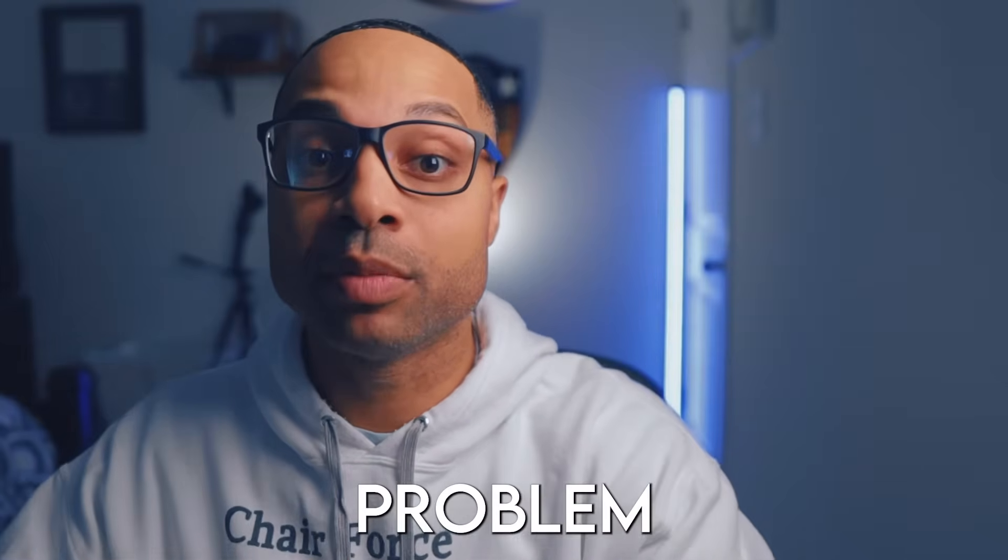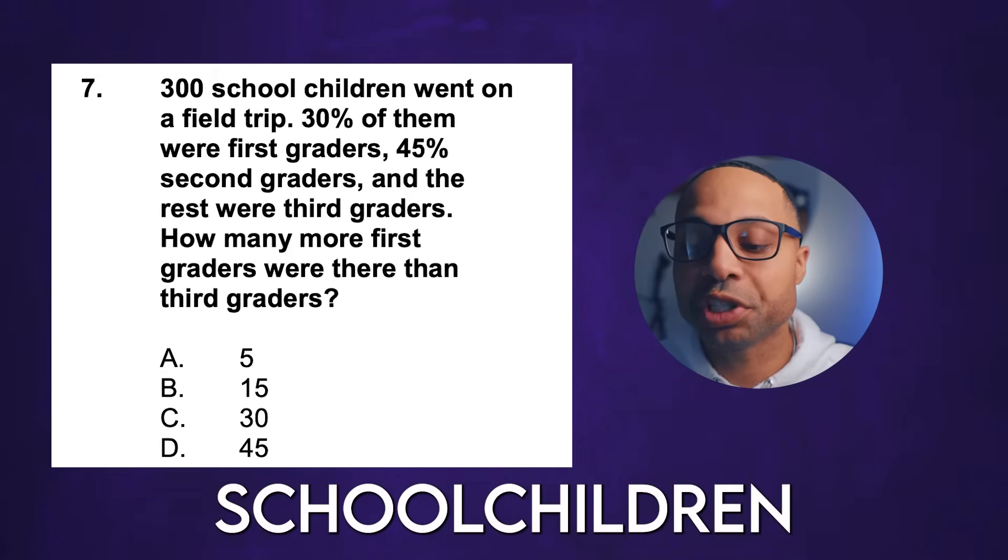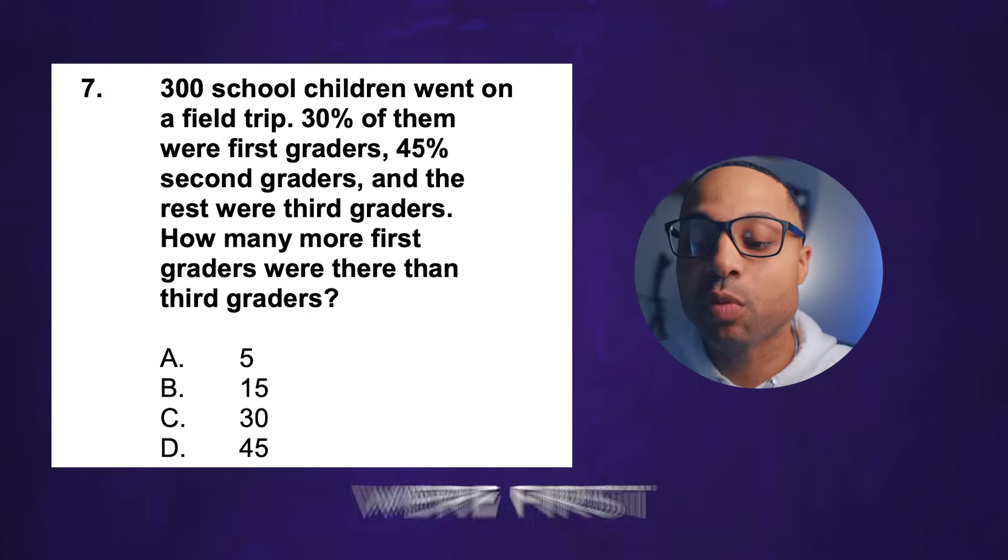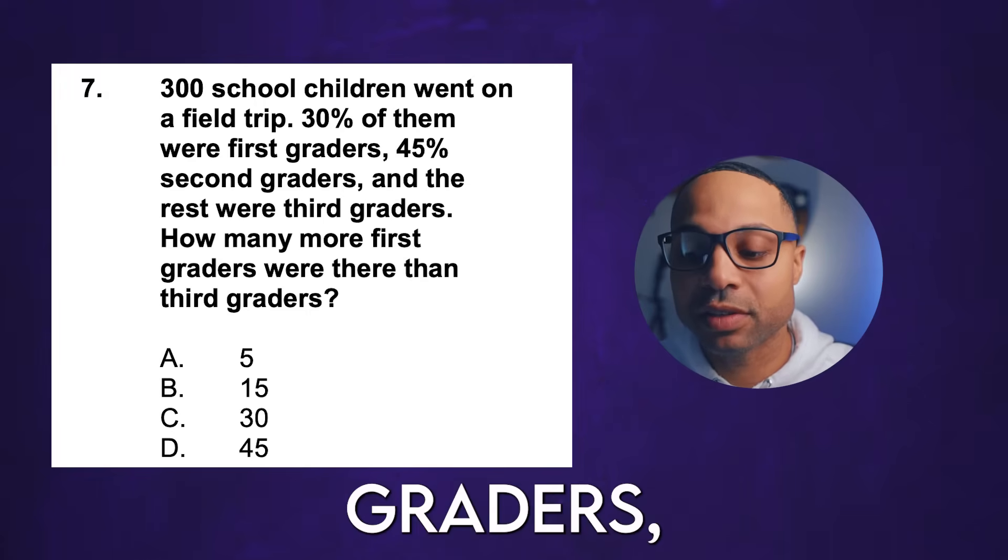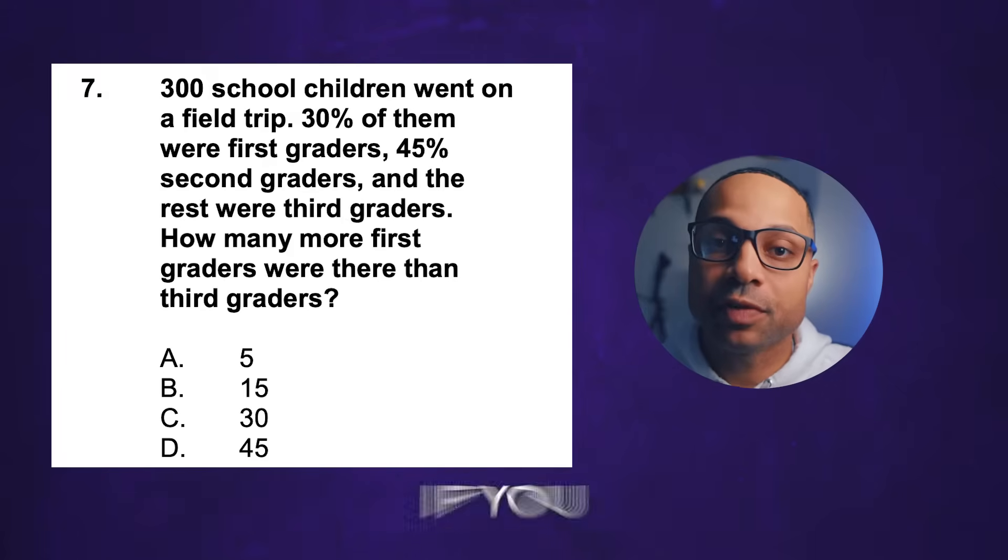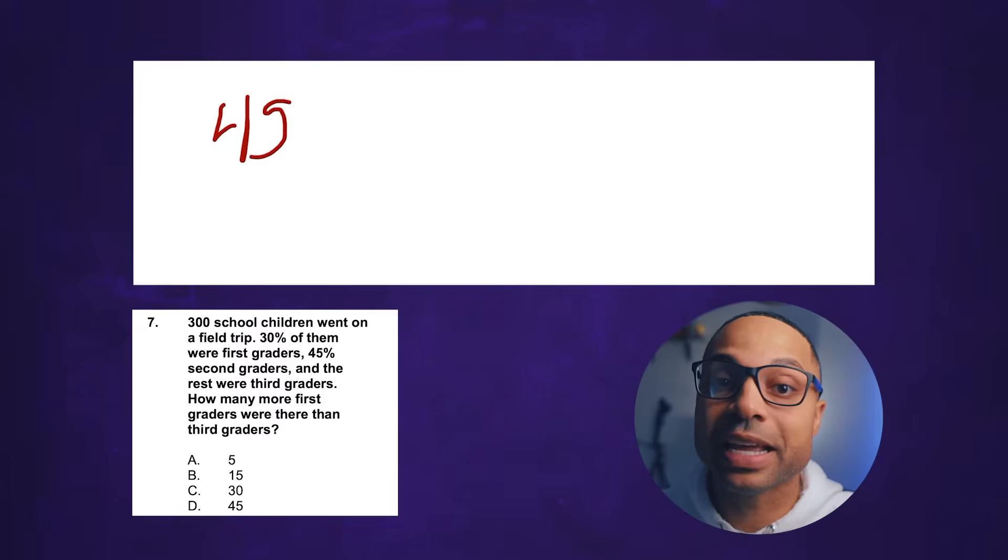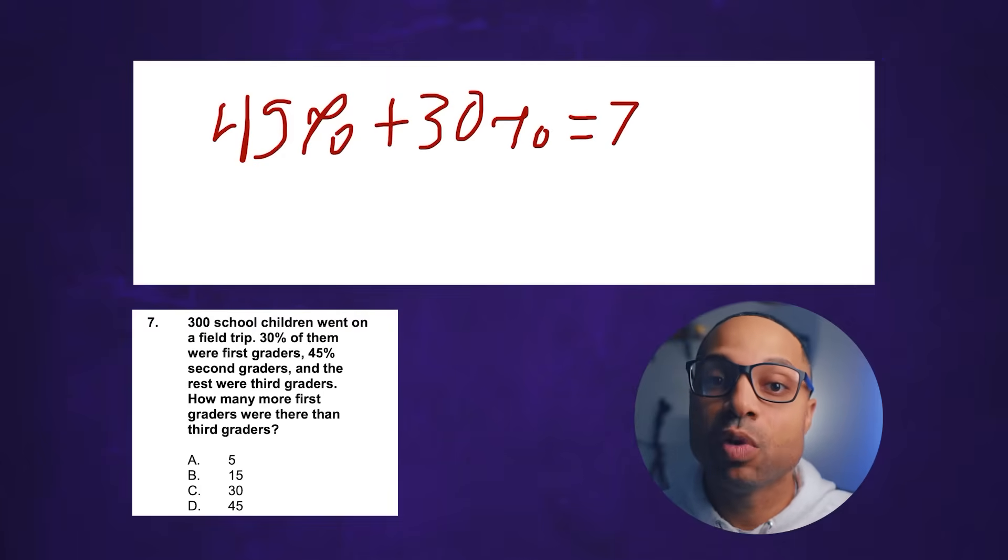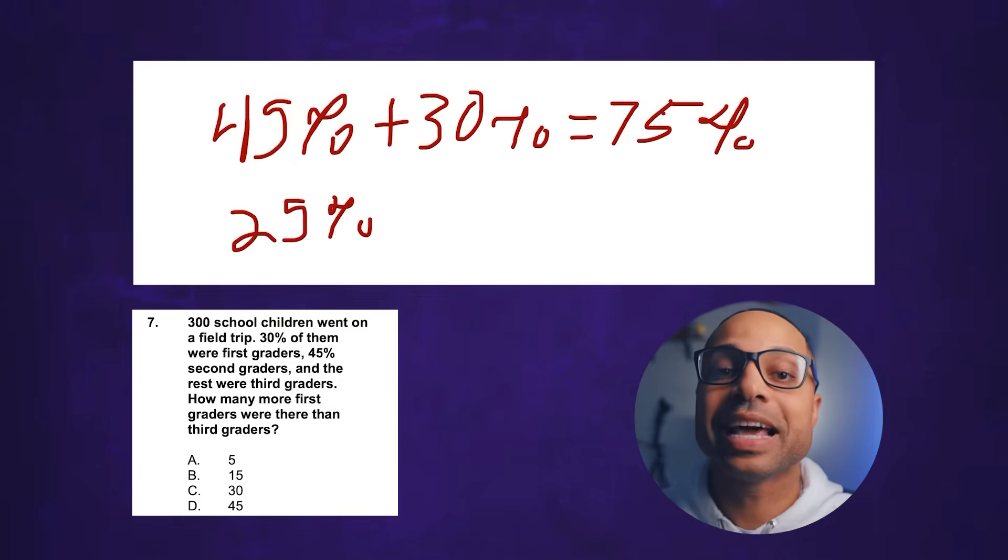Now let's take a look at a word problem with percentages. It says 300 school children went on a field trip. 30 percent of them were first graders, 45 percent second graders and the rest were third graders. How many more first graders were there than third graders? Now if you look at this word problem it doesn't tell you the percentage of third graders so you got to figure that out. Since they told you the percentage of first and second all you have to do is add the 30 percent plus the 45 percent which gives you 75 percent. If you subtract 75 percent from 100 percent that leaves 25 percent. And that is a reflection of how many third graders were on this trip.